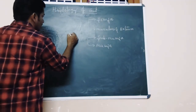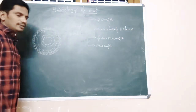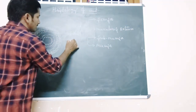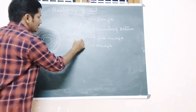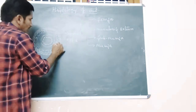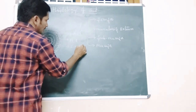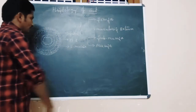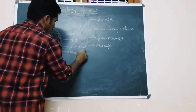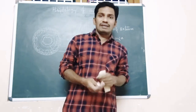See in this diagram — this layer here is known as the serosa, this one is known as the muscularis externa, then the submucosa, and the last one is known as the mucosa. Muscularis externa has two layers.